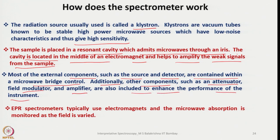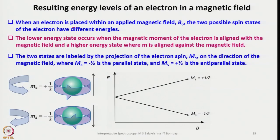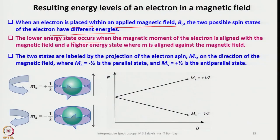EPR spectrometers typically use electromagnets and the microwave absorption is monitored as the field is varied. When an electron is placed within an applied magnetic field B₀, the two possible spin states of the electron have different energies. In the absence of a magnetic field the spin states have the same energy, but once the electron is placed in a magnetic field they possess two different energies — a lower energy state when the magnetic moment is aligned with the field, and a higher energy state when aligned against the field.